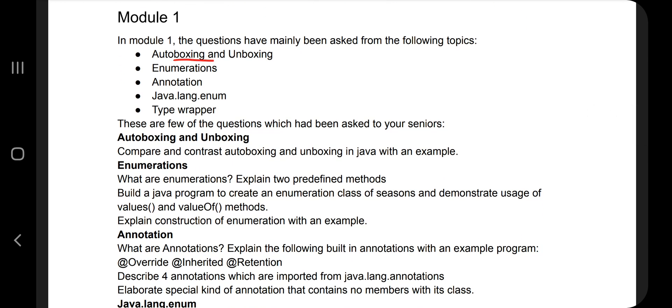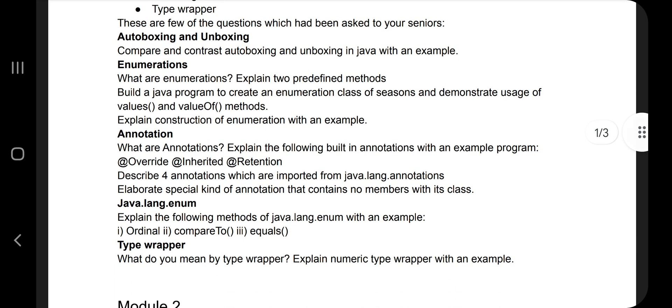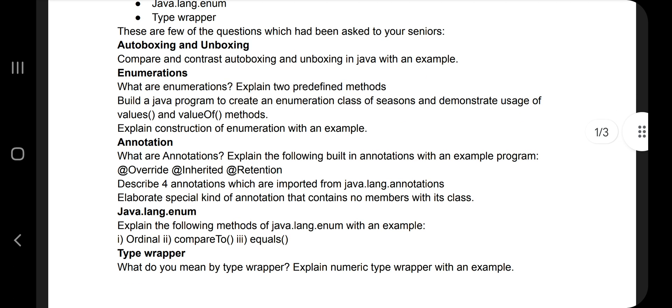Coming to Module 1, the main important concepts are autoboxing and unboxing, enumeration is the most important, and annotations. These two are the super important ones and the rest of them are subtopics. Basically, when you open the notes, first go to the enumerations and annotations. For your information, I have collected few sample questions which are asked in the previous papers and most repeated ones, so you can go through them and the answers will be easily available in the notes itself.